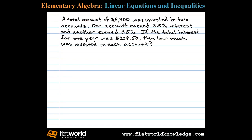The total amount of five thousand nine hundred dollars was invested in two accounts. One account earned three and a half percent interest and another earned four and a half percent interest. If the total interest for the year was two hundred twenty-nine dollars and fifty cents, then how much was invested in each account? Let's begin by identifying variables.